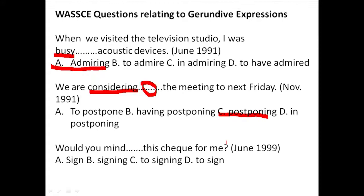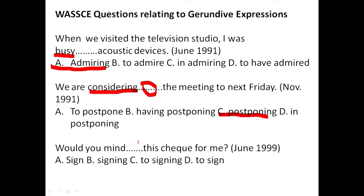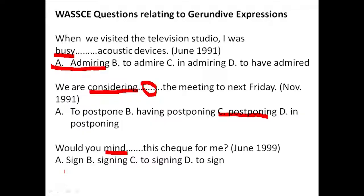Question, June 1999: 'Would you mind ___ this check for me?' The key word is mind, a word that requires a gerund — a word with ING. Option A, 'sign,' is wrong. Option B, 'signing,' is correct: 'Would you mind signing this check for me?' Option C, 'to sign in,' is wrong. Option D, 'to sign,' is wrong. Our answer is option B.